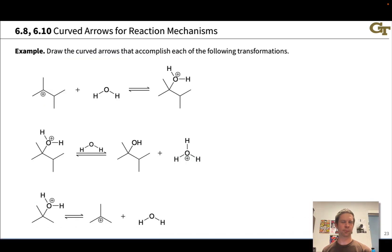One thing we'll want to be able to do is look at reactant structures and product structures for an elementary step and draw curved arrows to show the movements of electrons that convert those reactants into those products. We're going to practice this on this slide, drawing the curved arrows that accomplish each of these following transformations, assuming they occur in a single elementary step.